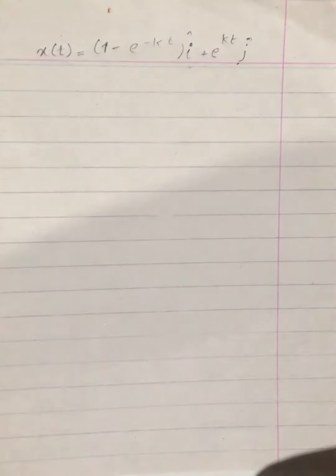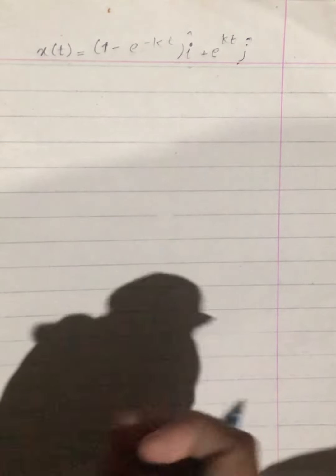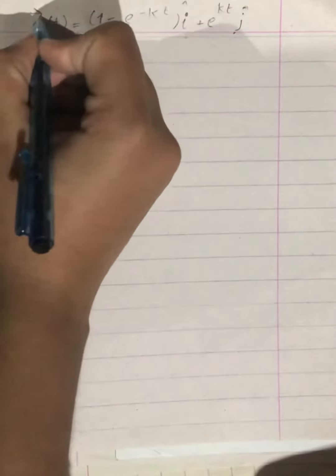This is the position of a particle given as a function of time. We have to find the velocity and acceleration of the particle. This is a position vector.